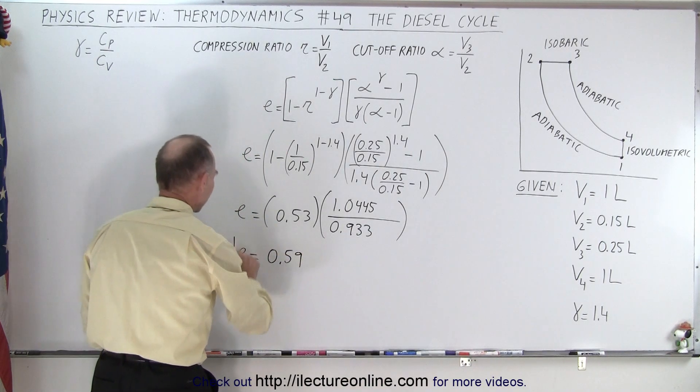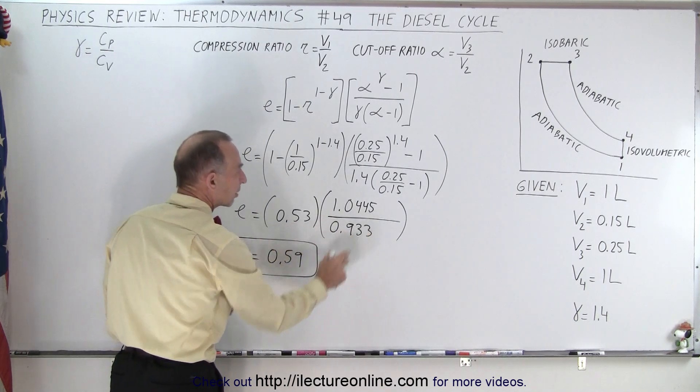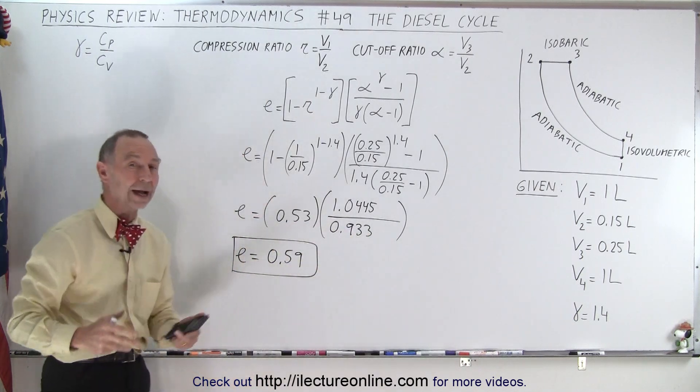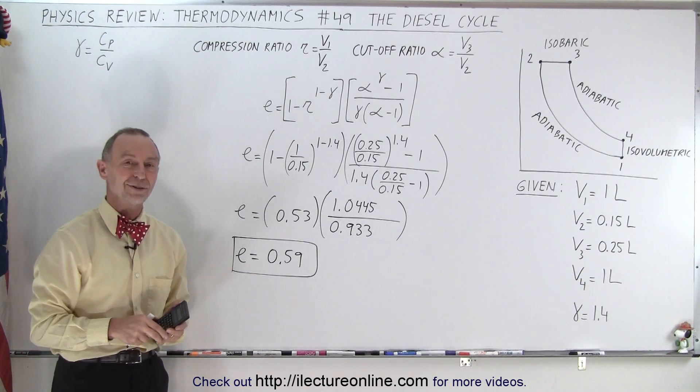0.59. So this is the difference between a diesel engine and a gasoline engine. You get some additional efficiency due to the higher temperatures, and that is how we calculate the efficiency of a diesel engine.